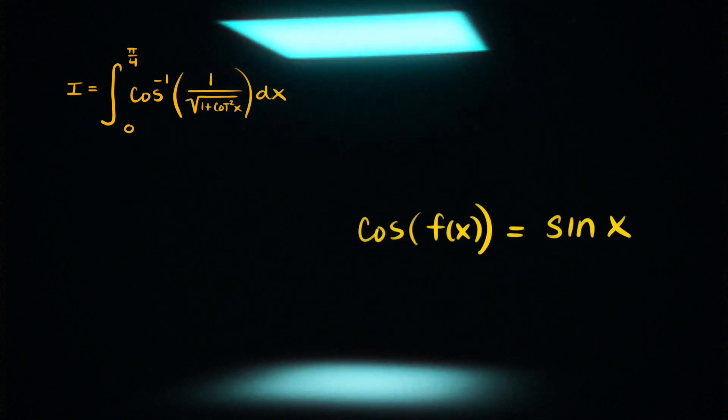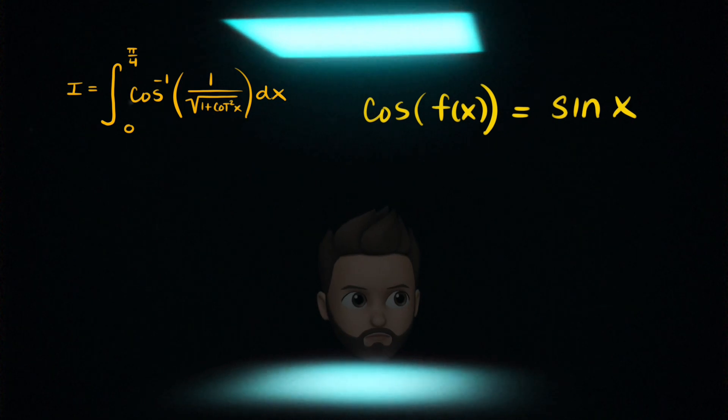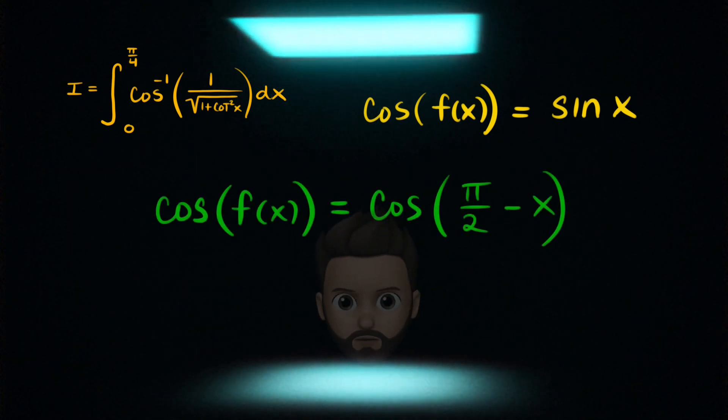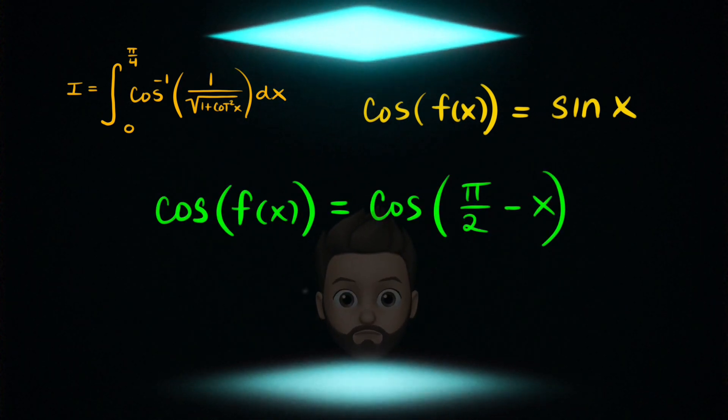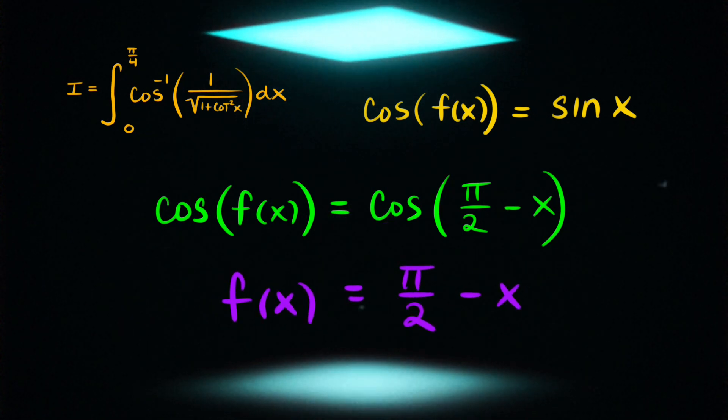Things are starting to clear up here. Let's keep going. So now, using the co-function for sine of x, that is cosine of pi over 2 minus x, we can then draw the conclusion that f of x is really pi over 2 minus x.